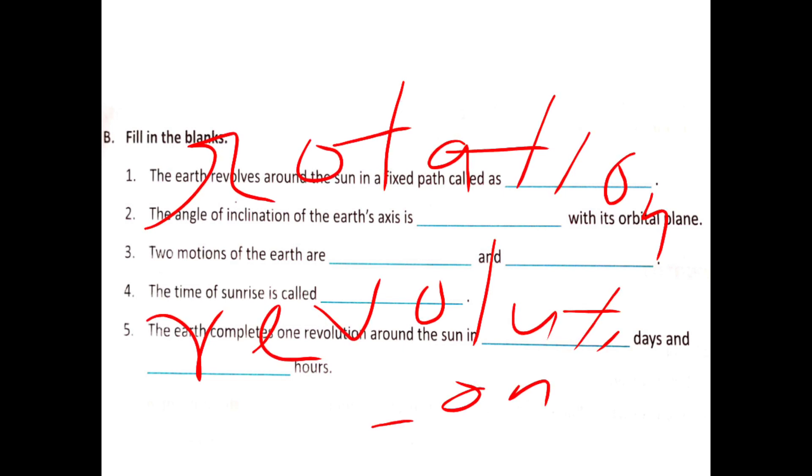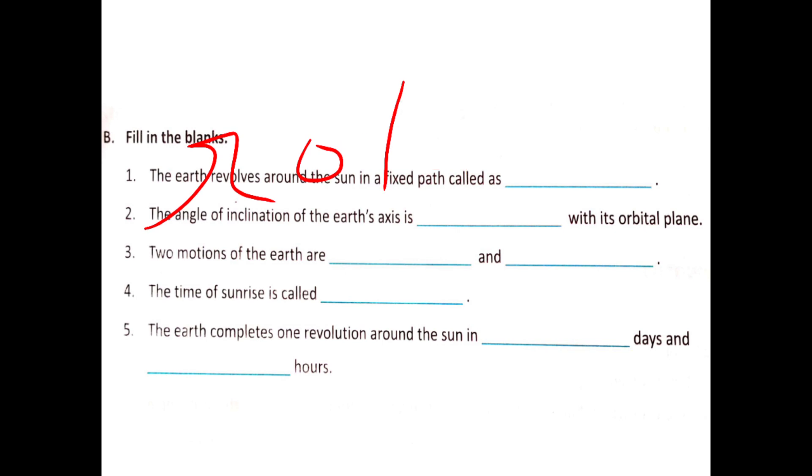Question 5: The Earth completes one revolution around the sun in dash days and dash hours. Then 365 days and 6 hours.